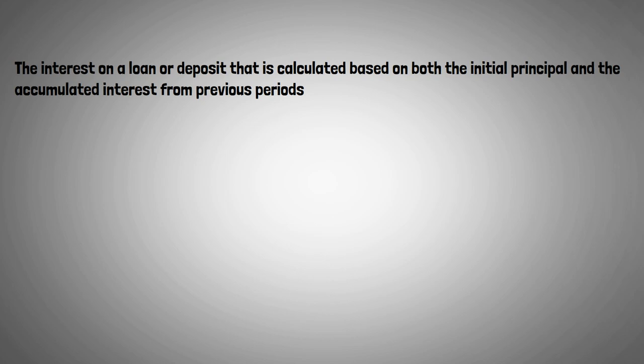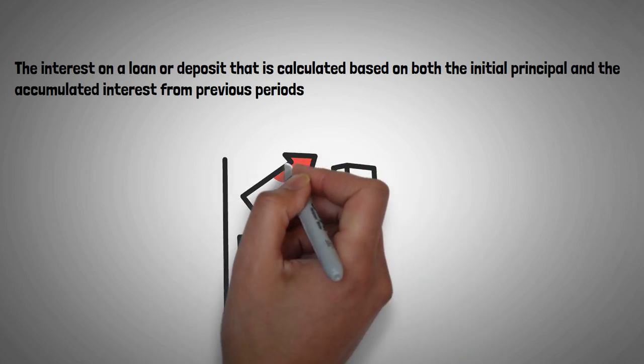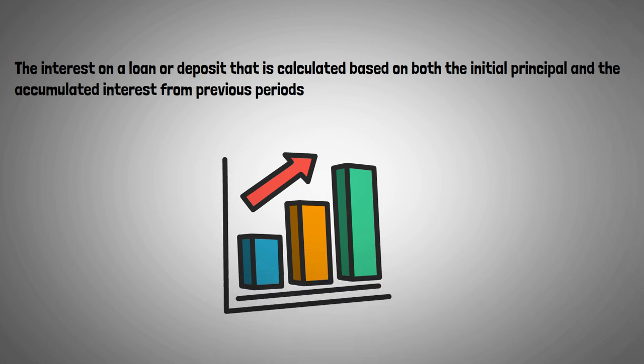In other words, the interest you earn in one period becomes part of the principal for the next period, allowing your investment to grow exponentially over time. This is why compounding is often referred to as the miracle of compounding, or like Albert Einstein famously referred to compounding interest as the eighth wonder of the world.